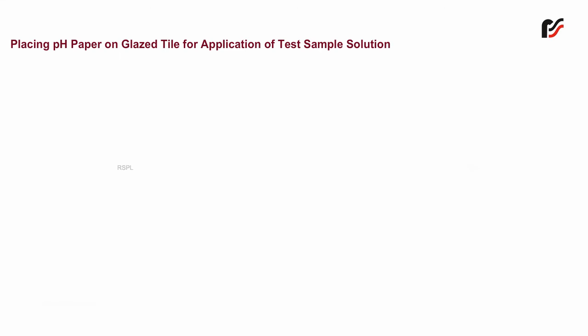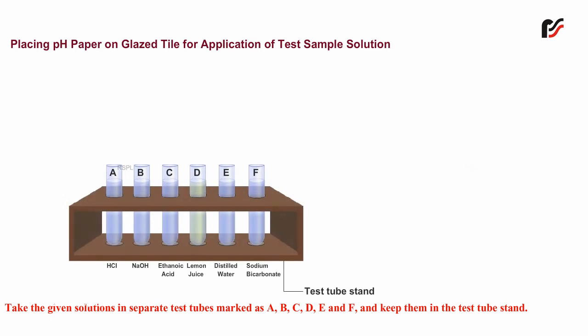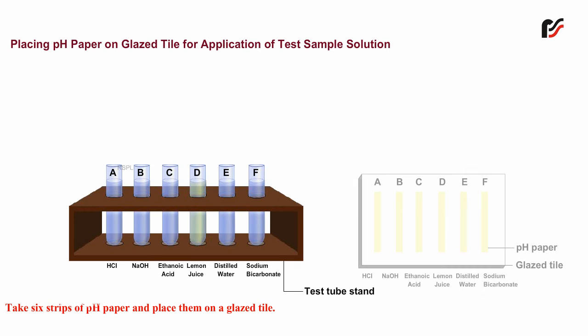Place pH paper strips on a glazed tile for application of test sample solutions. Take the given solutions in separate test tubes marked as A, B, C, D, E, and F and keep them in the test tube stand. Take 6 strips of pH paper and place them on a glazed tile.